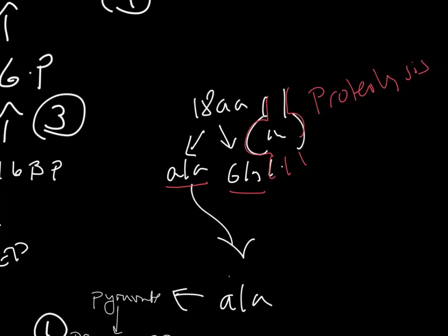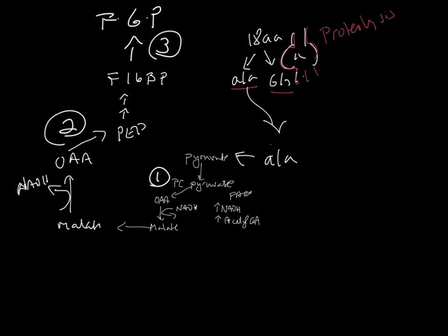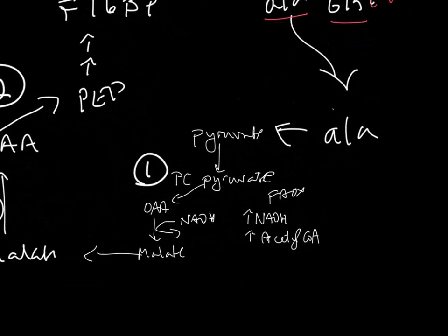Alanine goes to the liver and is used as a substrate. Those carbons are used as a substrate for gluconeogenesis. I'm picking up the pathway now with alanine in the liver. It is transaminated to pyruvate.